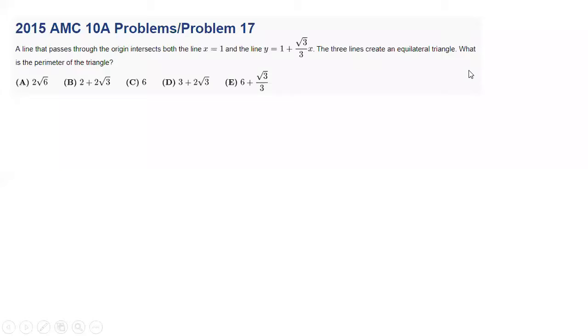Today we will be taking a look at the 2015 AMC 10A problem number 17. A line that passes through the origin intersects both the line x equals 1 and the line y equals 1 plus root 3 over 3x. The three lines create an equilateral triangle. What is the perimeter of the triangle?